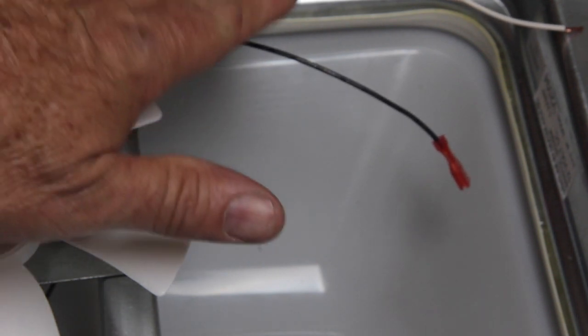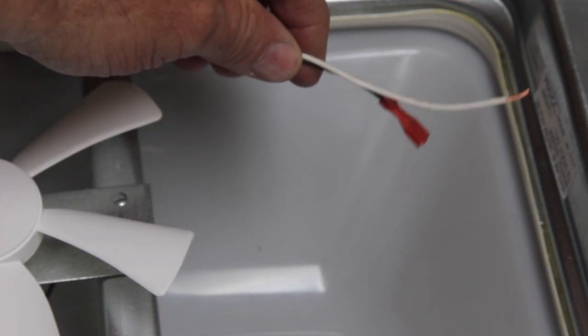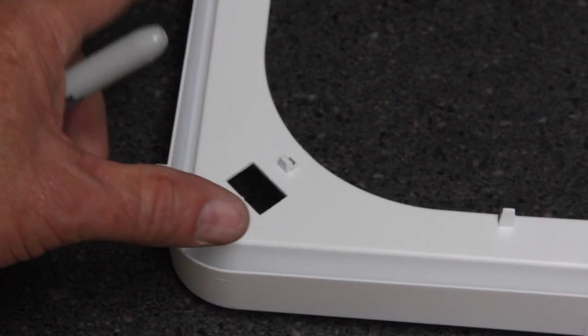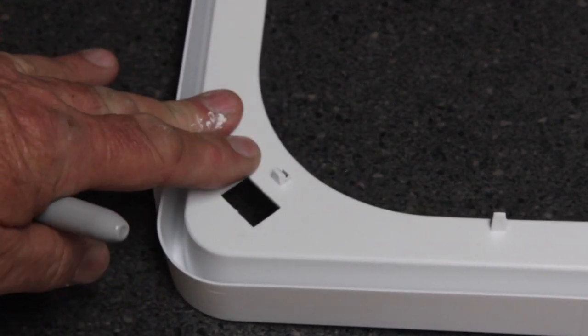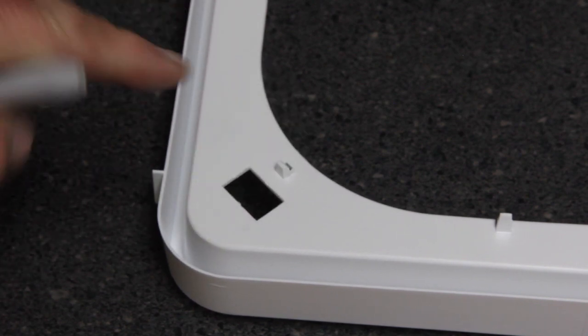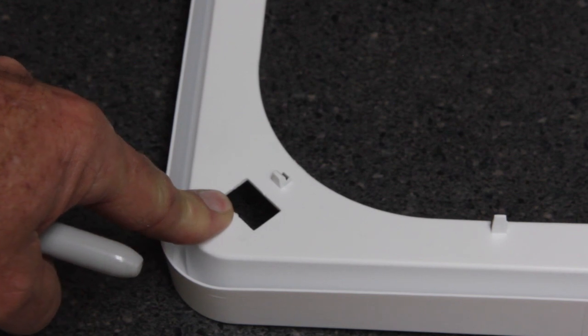We're now going to take the internal housing and cut it to fit the size of the new switch. Place the plastic cover either face up or face down, whichever is more comfortable for you—it's going to depend on which fan you have.